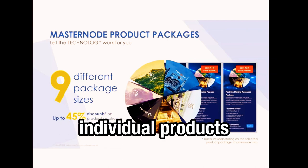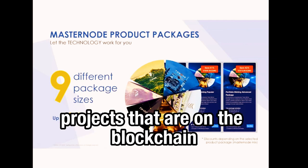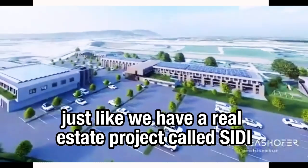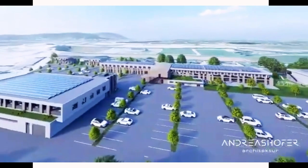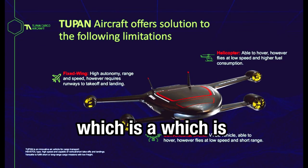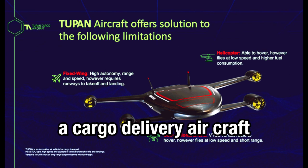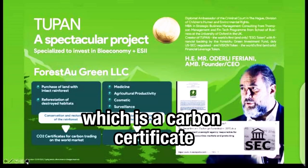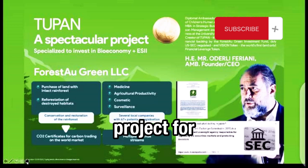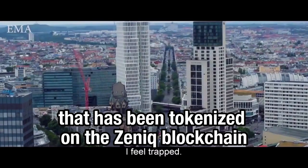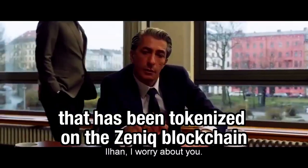There are individual projects on the blockchain. We have a real estate project called CD, and we have the T-Drone, which is a cargo delivery aircraft. We also have the Two Pound, which is a carbon certificate project for environmental protection. And we have Regardless, which is a movie that has been tokenized on the Zeniq blockchain.